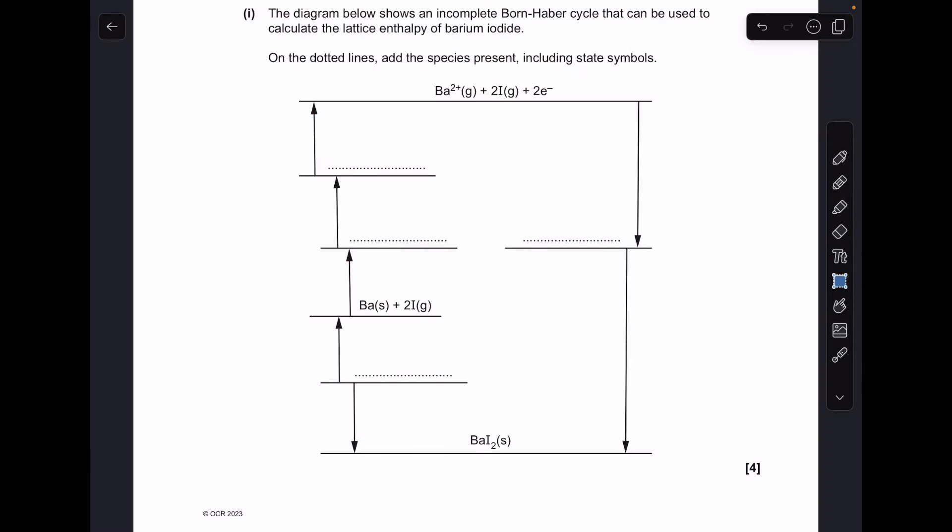Okay, so let's make a start. First, I'm going to add the species present on the dotted lines, including state symbols. We'll start here with the elements. We need a mole of barium solid and we're going to react that with a mole of I2, which is a solid under standard conditions, so be careful with that state symbol.